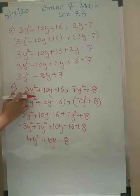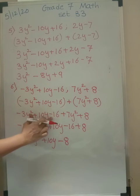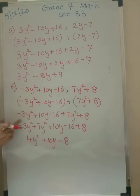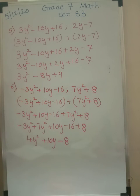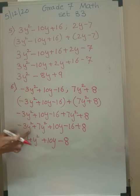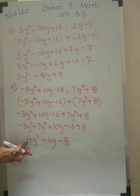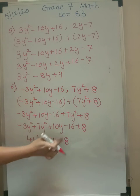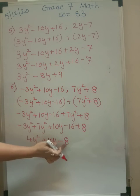Similarly in the sixth question, there are 3 terms in the first expression and 2 terms in the second. Let us add them up: minus 3y squared plus 10y minus 16, plus 7y squared plus 8. Open the brackets: minus 3y squared plus 10y minus 16 plus 7y squared plus 8. Like terms: y squared and y squared, constant and constant, and 10y is alone with no other like term. So minus 3y squared plus 7y squared — minus 3 plus 7 is plus 4 — giving 4y squared. 10y stays as it is. Minus 16 plus 8 — opposite signs, subtract, take the sign of the greater number — gives minus 8.